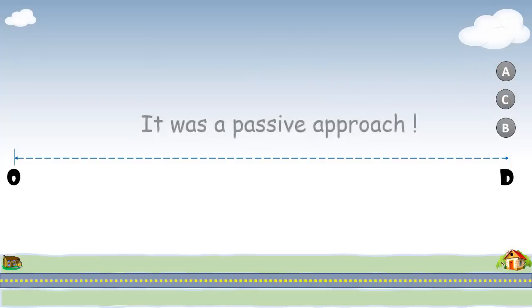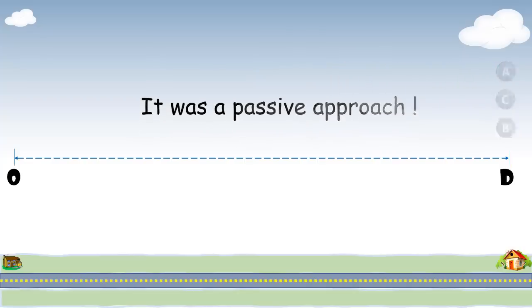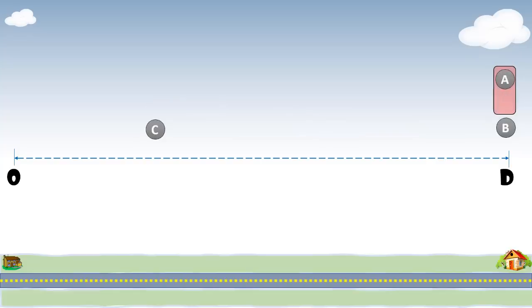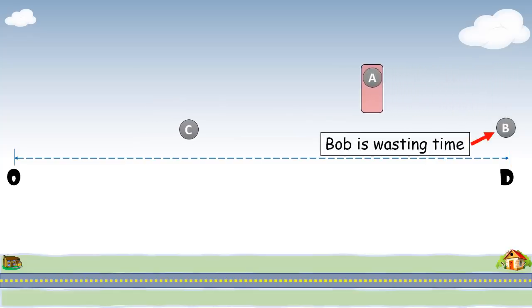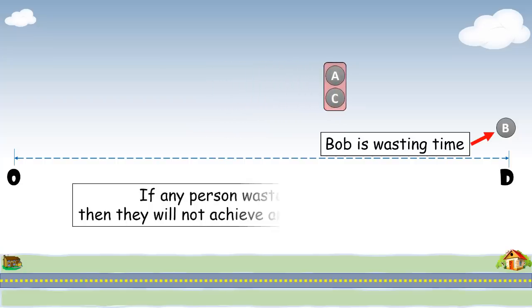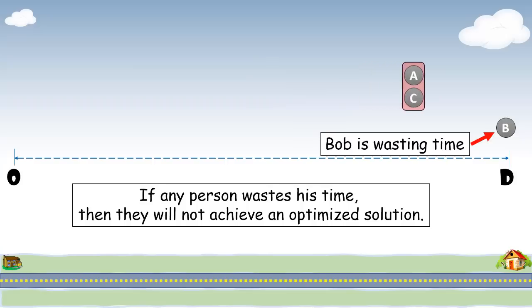Well, this was a passive approach because when Bob got off the bike at the destination, he stayed there in an idle position. He was doing nothing, so he was not contributing to optimize the solution. And it's perfectly logical to say that if any person is wasting his time, then they will not achieve an optimized solution.